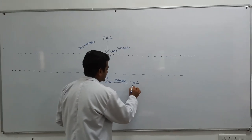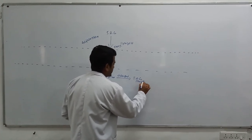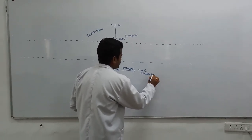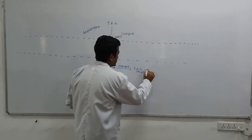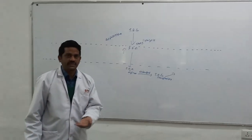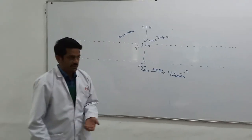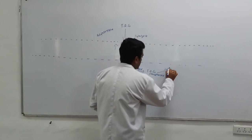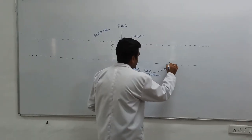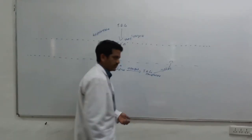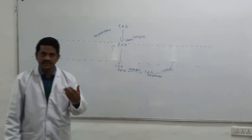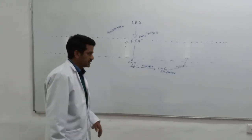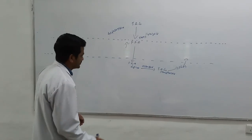In the fed state, the acyl-CoA is going to be carried by VLDL to the blood circulation, so that the triacylglycerols can be carried out to the blood circulation.